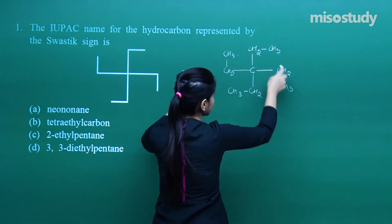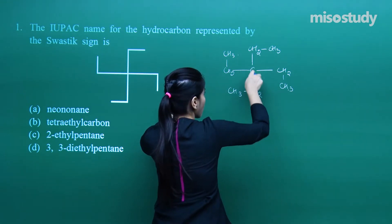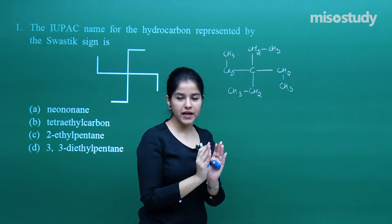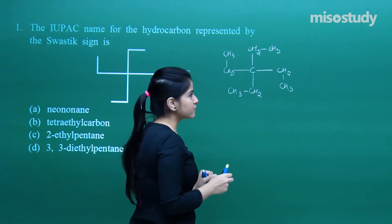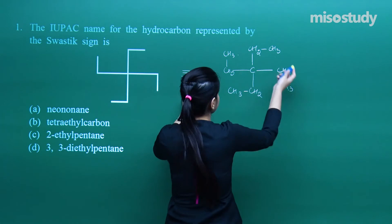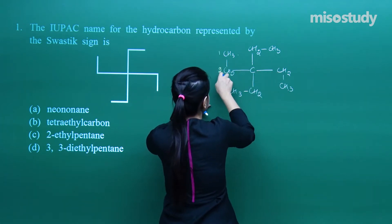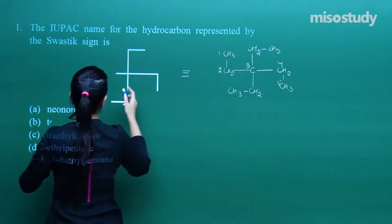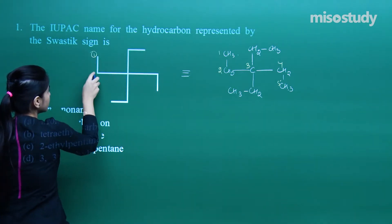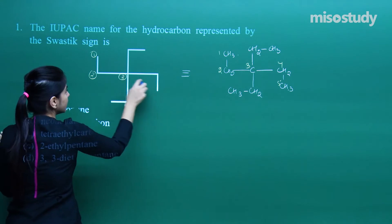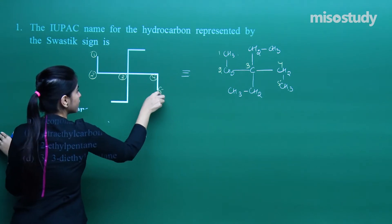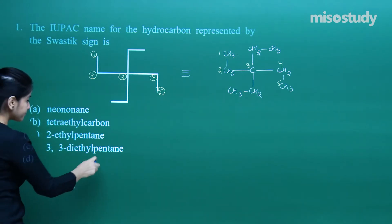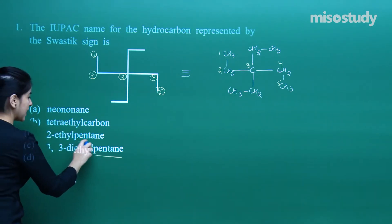Now we need to number the carbons and find out the word root. Either it can be this way or that way — any of them, if you pick any one of the word roots, it would have a similar number of carbon atoms. So I am choosing this: 1, 2, 3, 4 and 5. You can also choose it from the other side — that also gives 1, 2, 3, 4 and 5. That means I need to choose 'pent' as the word root.